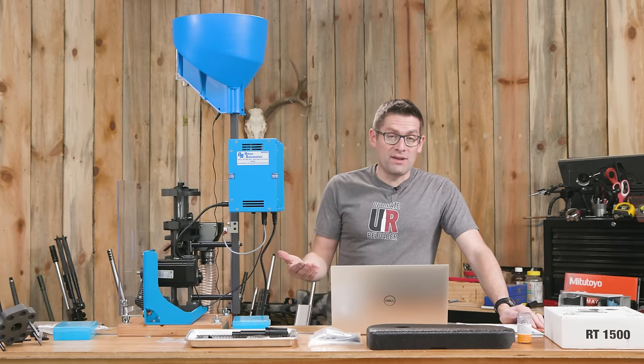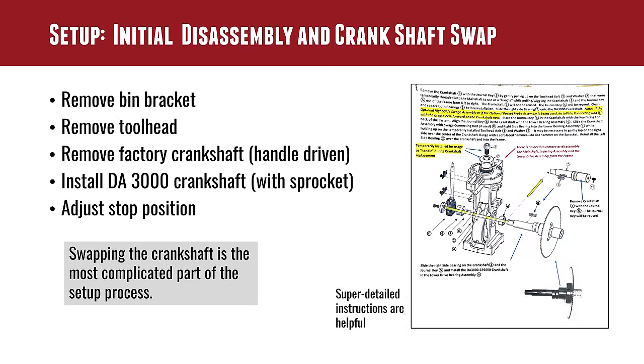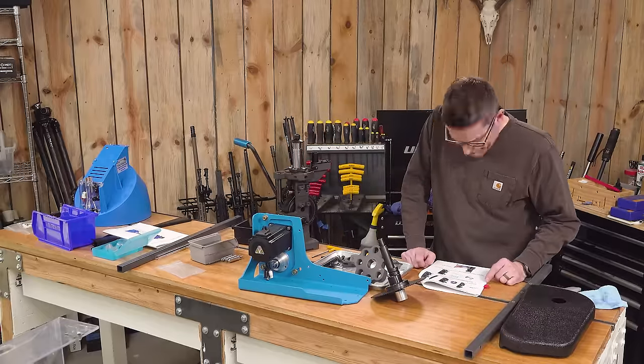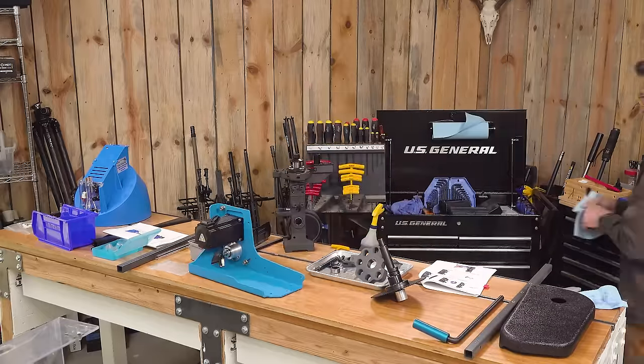So the first phase of the setup is kind of the initial disassembly and crankshaft swap on the actual machine, the CP2000 in this case. So we removed the bin bracket, we removed the tool head, we removed the factory crankshaft, which is the handle driven crankshaft.